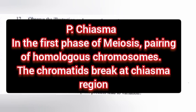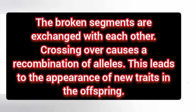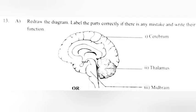Question 12: Observe the illustration and answer the questions. Part A: Identify P and write how it is formed. Answer: B-chiasma. In the first phase of meiosis, during pairing of homologous chromosomes, the chromatids break at the chiasma region.